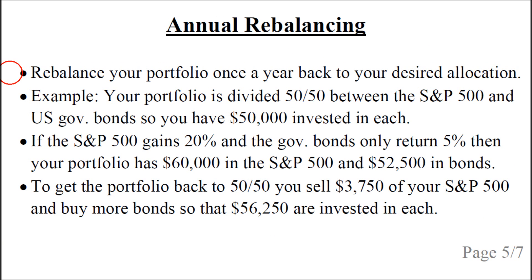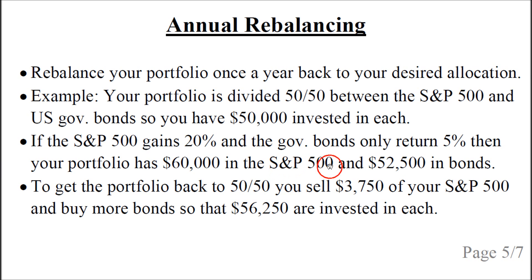You can rebalance your portfolio once a year back to your desired allocation. For example, if your portfolio is divided 50-50 between the S&P 500 and US government bonds, so you have $50,000 invested in each, and then if the S&P 500 gains 20% and the government bonds only return 5%, then your portfolio has $60,000 in the S&P 500 and only $52,500 in US government bonds. So to get the portfolio back to 50-50, you sell $3,750 of your S&P 500 investment and you buy more bonds so that $56,250 are invested in each.